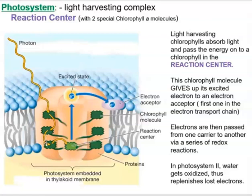The electrons in the reaction center chlorophylls get so excited that they are donated to the first primary electron acceptor in the ETC. This picture shows photons being absorbed by chlorophyll, with energy passed from one molecule to the next until it reaches the reaction center — where electrons jump to high energy levels and are donated to the electron acceptor, becoming reduced.